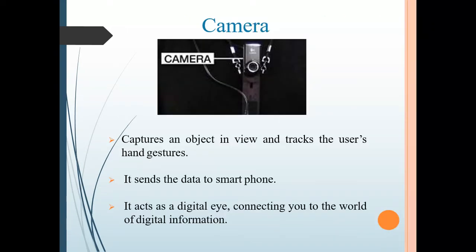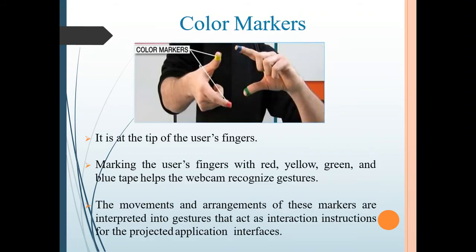Camera captures an object in view and tracks the user's hand gestures, then sends the data to the smartphone. Color Marker is at the tip of the user's fingers. Marking the user's fingers with red, yellow, green, and blue tape helps the webcam recognize gestures.